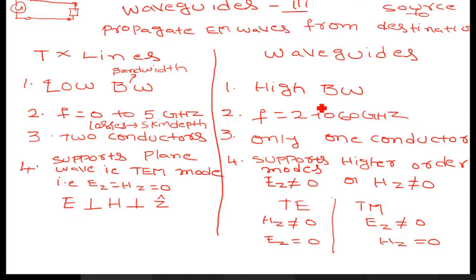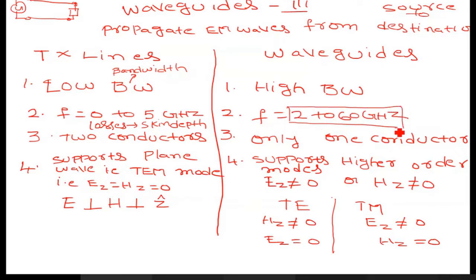This is not the case with waveguides. However, waveguides will not support DC or zero frequency. They will support only from 2 gigahertz up to a maximum of 60 gigahertz. This is another key difference: transmission lines can support from zero frequency, and even a DC signal will be transmitted through them. But waveguides will not transmit a DC signal.